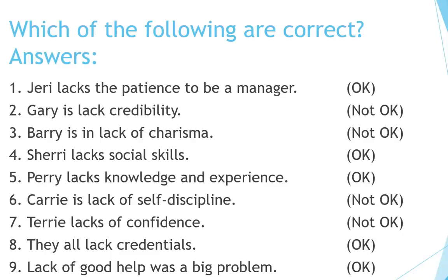Number 6: Carrie is lack of self-discipline — not OK. It should be: Carrie lacks self-discipline. Number 7: Terry lacks of confidence — not OK. It should be: Terry lacks confidence. Number 8: They all lack credentials — OK. Number 9: Lack of good help was a big problem — OK.